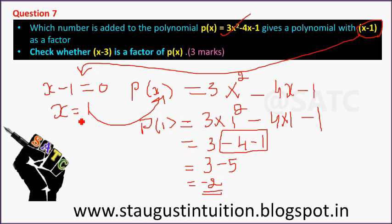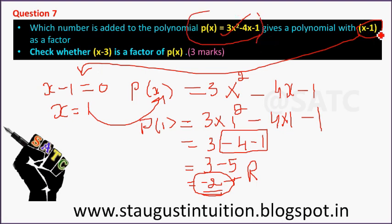Now the remainder will be given. If you want to get the system, the remainder is from the system. You get x minus 1 and the system gives minus 2.